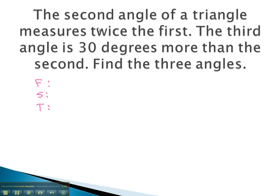Here, we are told that the second angle is twice the first angle. Currently, we know nothing about the first angle, so let's just call the first angle x. If the second angle is twice this, we multiply by 2 to get 2x.